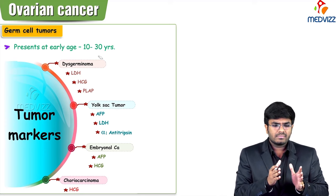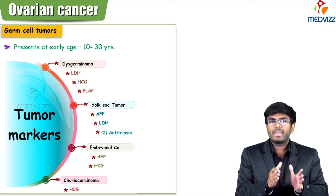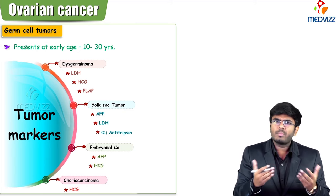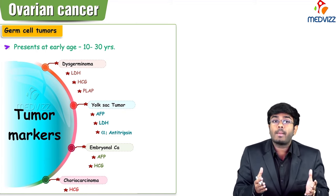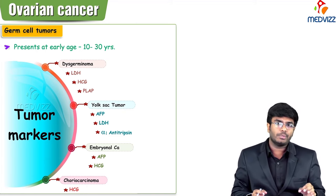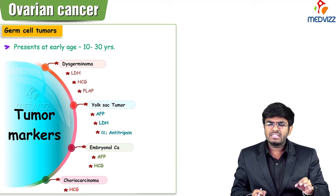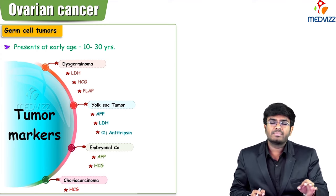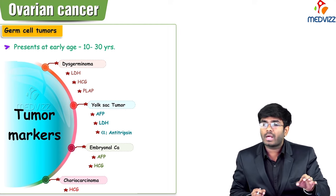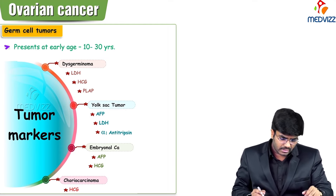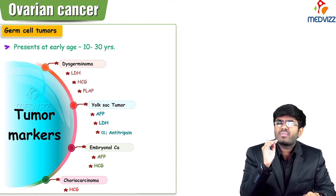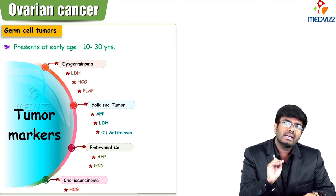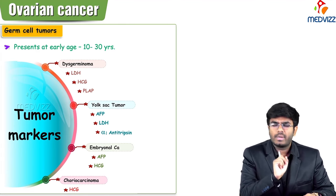An important point: these germ cell cancers have certain tumor markers. For exams, they will ask you things like 'HCG is the tumor marker of what?' or 'LDH is the main tumor marker of what?' So let's go further. The first germ cell tumor is teratoma.